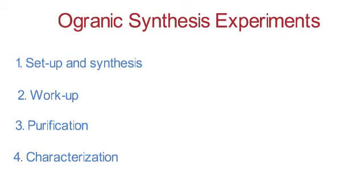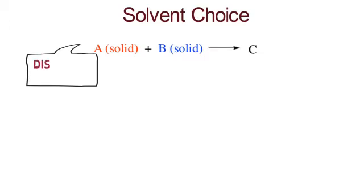An important factor in organic synthesis is solvent choice. For example, in this reaction, A and B react together to give product C. A and B are solids, so we need a solvent to dissolve them first, so that they can react with one another. Remember, solids won't react just by sitting in the flask.